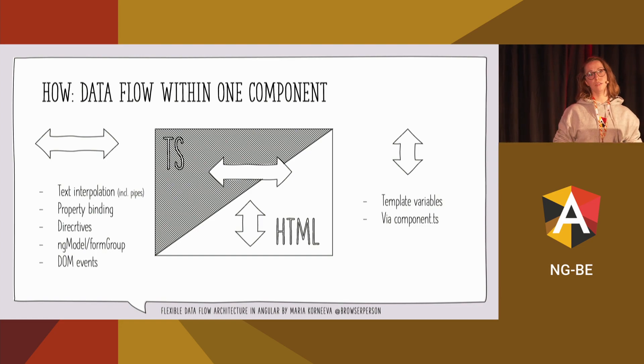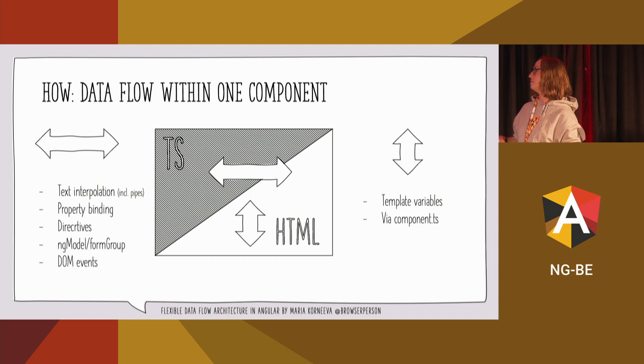At the component level, you have the following options. You have text interpolation including pipes, property binding, directives like structural directives or NG4, or maybe even custom directives. If you use forms, you have NG model or form group with two-way binding. The opposite way, you can get data from your template through DOM events, parsing event details. If you want to share data within your template, you can use template variables with the hashtag. These are the options at the component level.